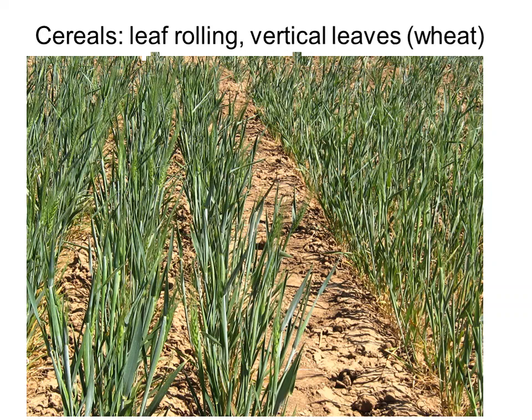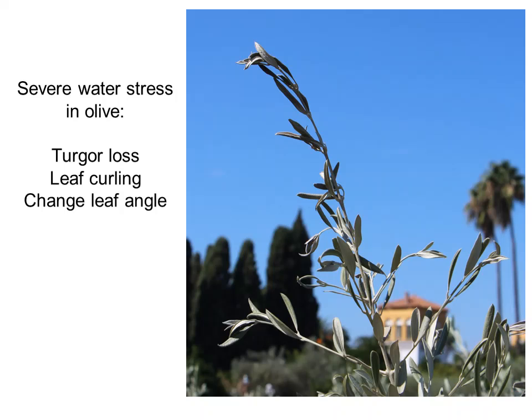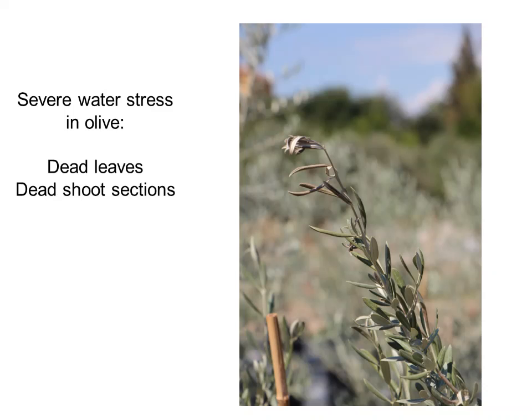In some cases we can detect water stress by dehydration of the fruits — in this case, olive trees. Under more severe water stress conditions we will observe loss of turgor, leaf curling, or change in leaf angle. When the water stress is extreme, we will observe dead leaves or even dead shoot sections.